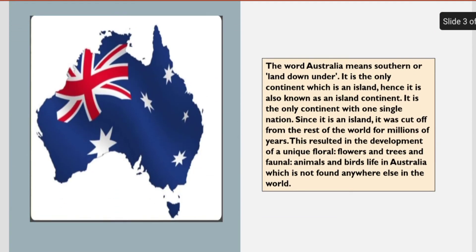The word Australia means 'southern' or 'land down under.' It is the only continent which is also an island, hence it is known as an island continent. It is the only continent with one single nation. Since it is an island, it was cut off from the rest of the world for millions of years, resulting in the development of unique flora and fauna not found anywhere else in the world.